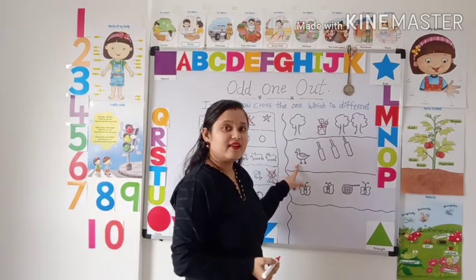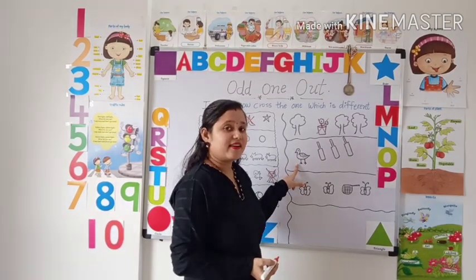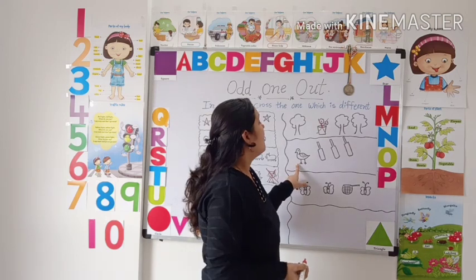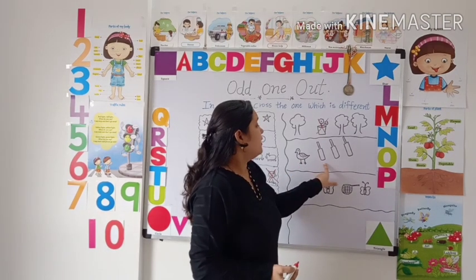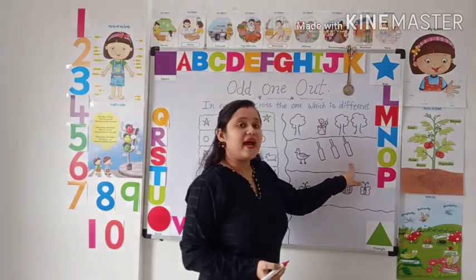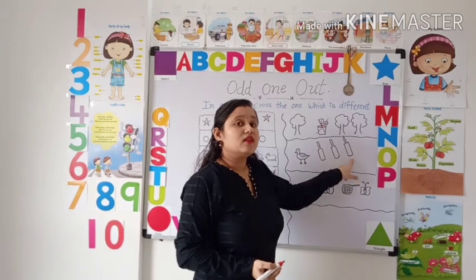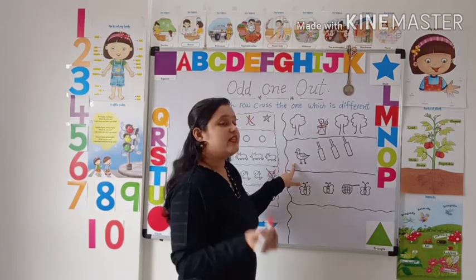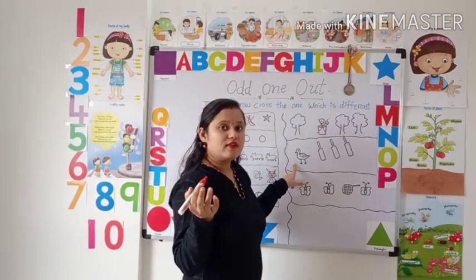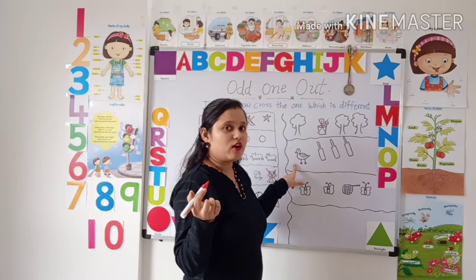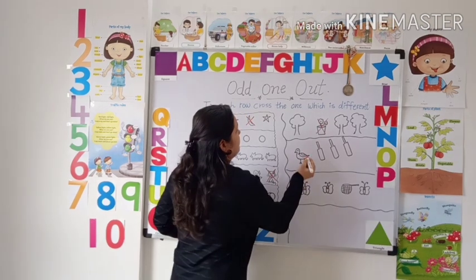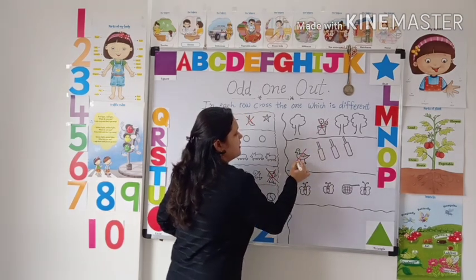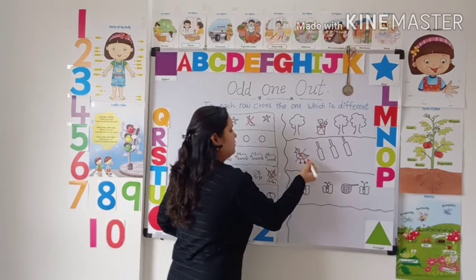What is this? Duck. This is a duck. And these are bats. Which one is odd? Yes, this is the odd one.